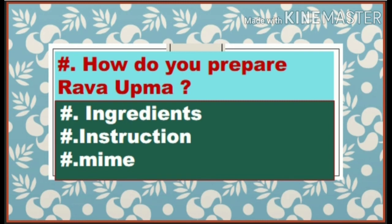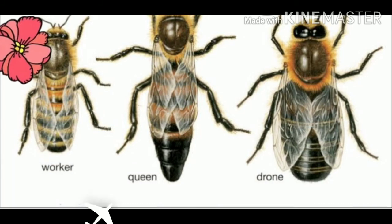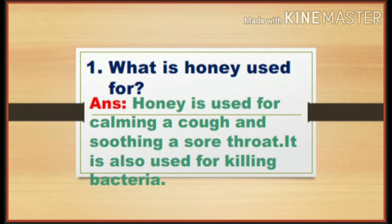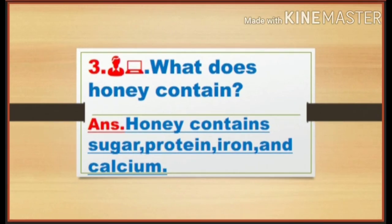Children, you have learned the lesson 'How Do Bees Make Honey.' Now I will ask a few questions. First: What is honey used for? Honey is used for calming a cough and soothing a sore throat, and it is also used for killing bacteria. Second: Where do bees collect nectar from? Bees collect nectar from flowers. Third: What does honey contain? Honey contains sugar, protein, iron and calcium.